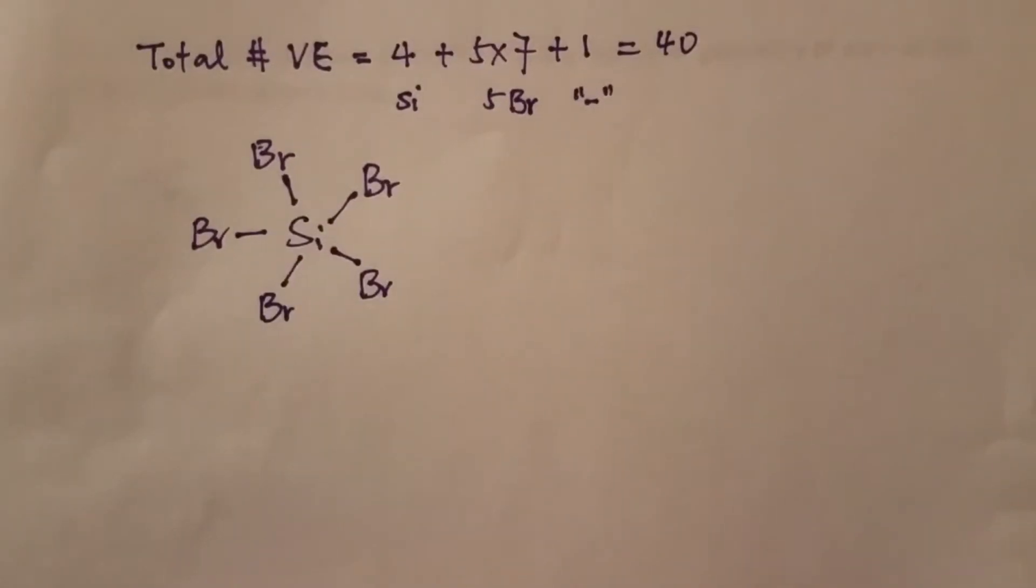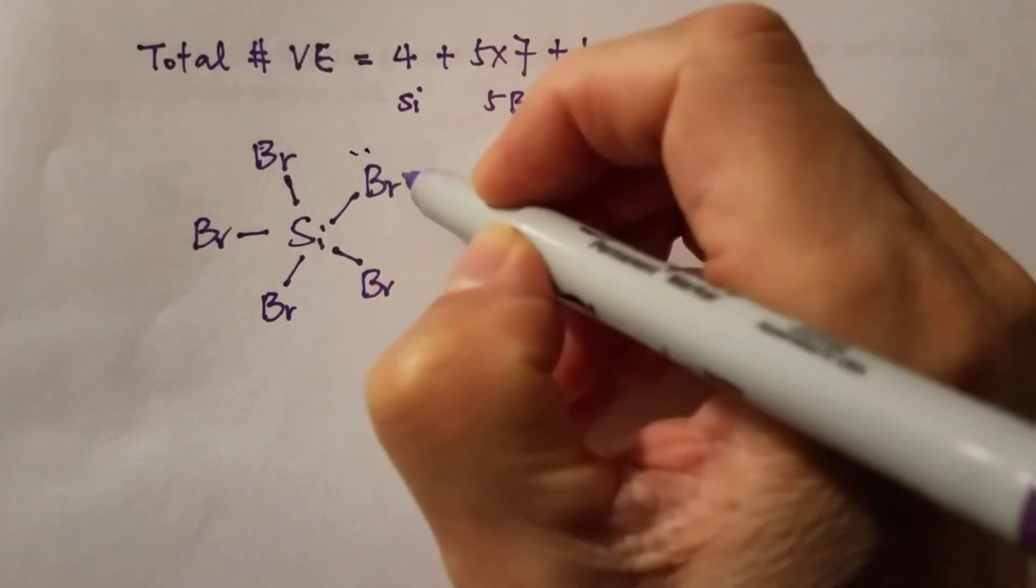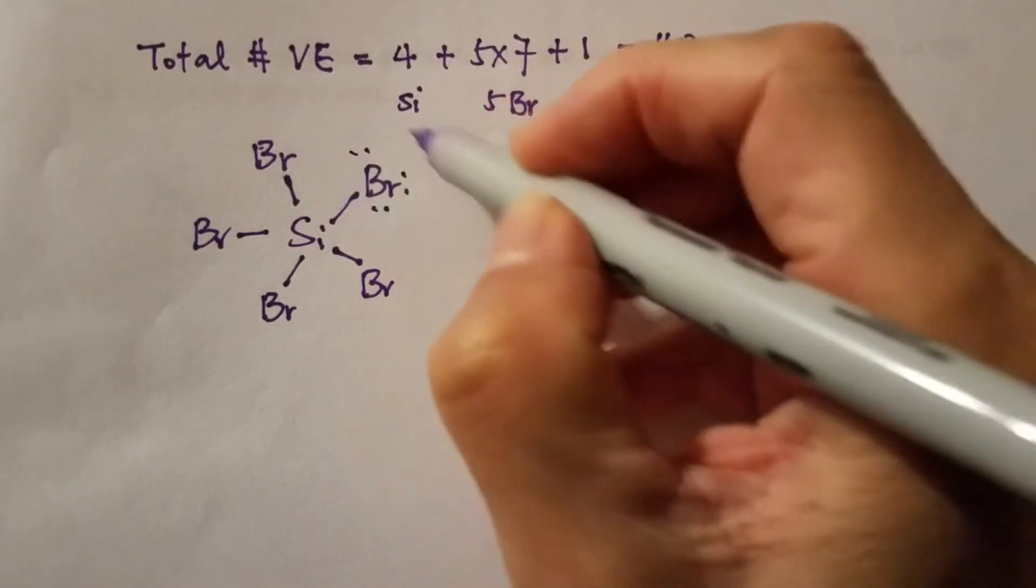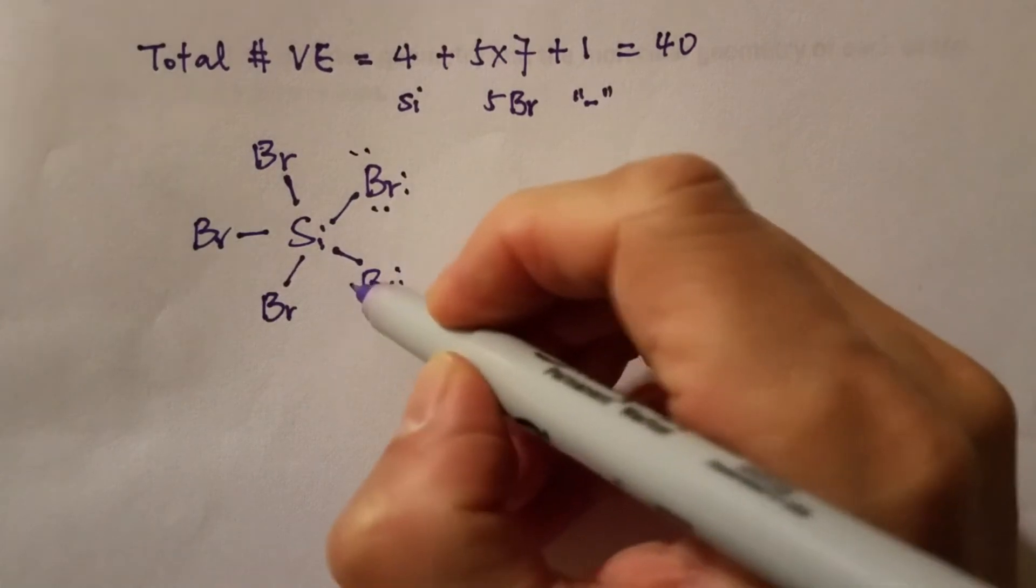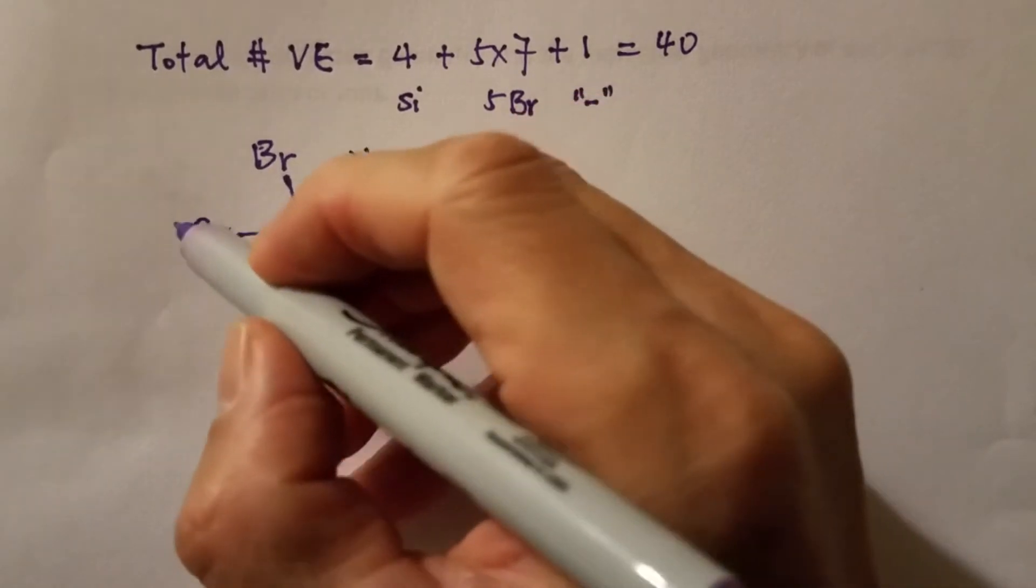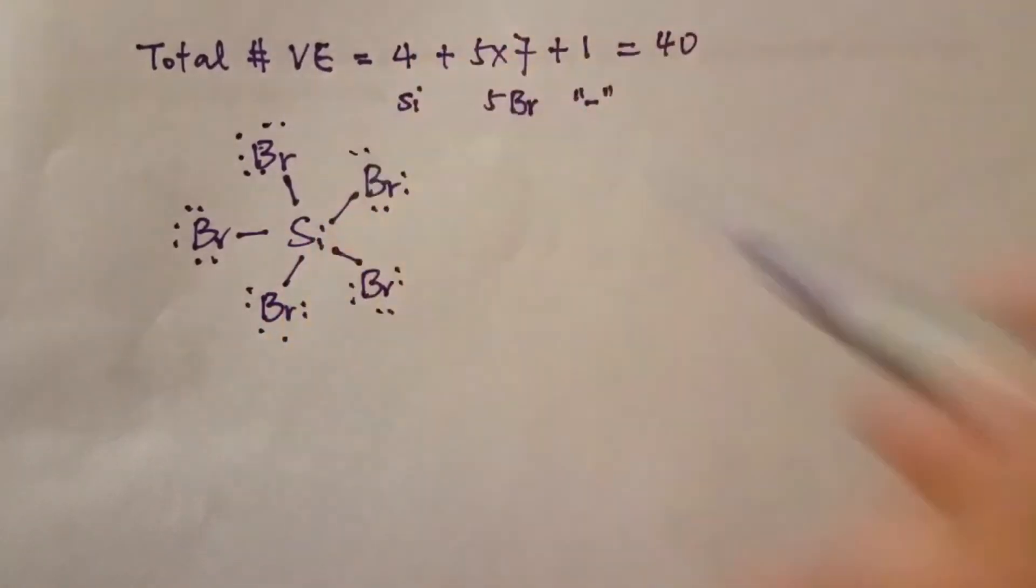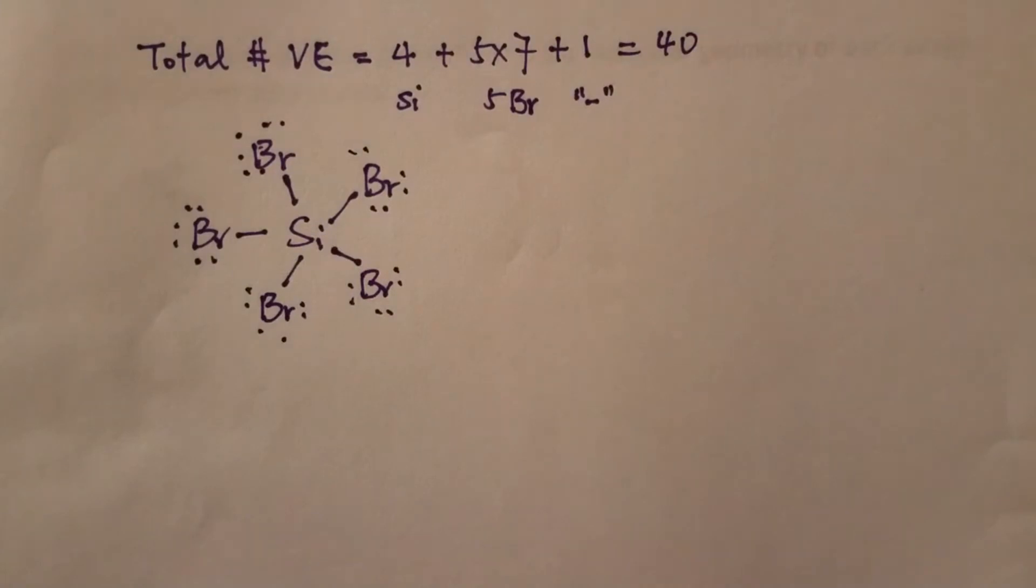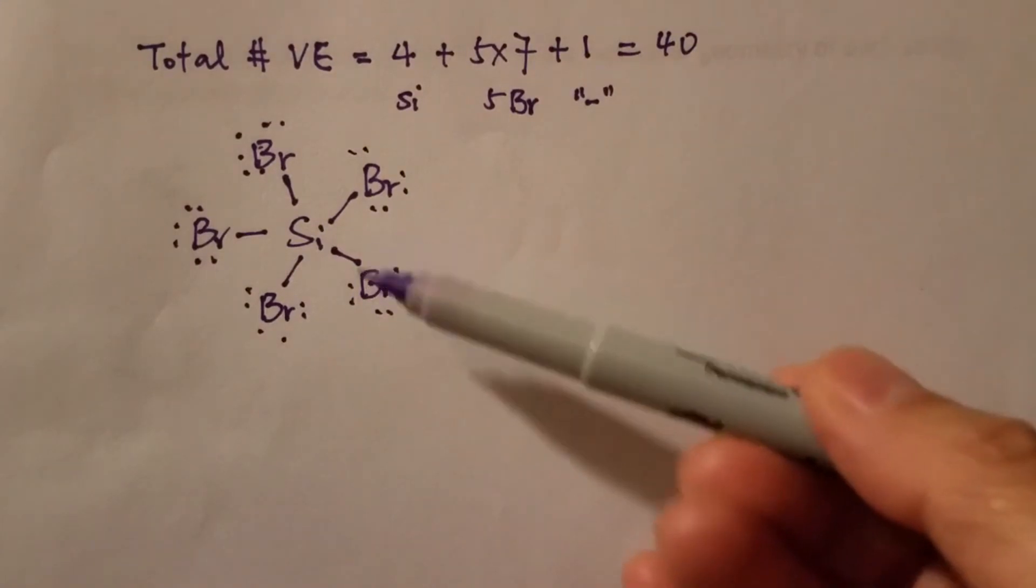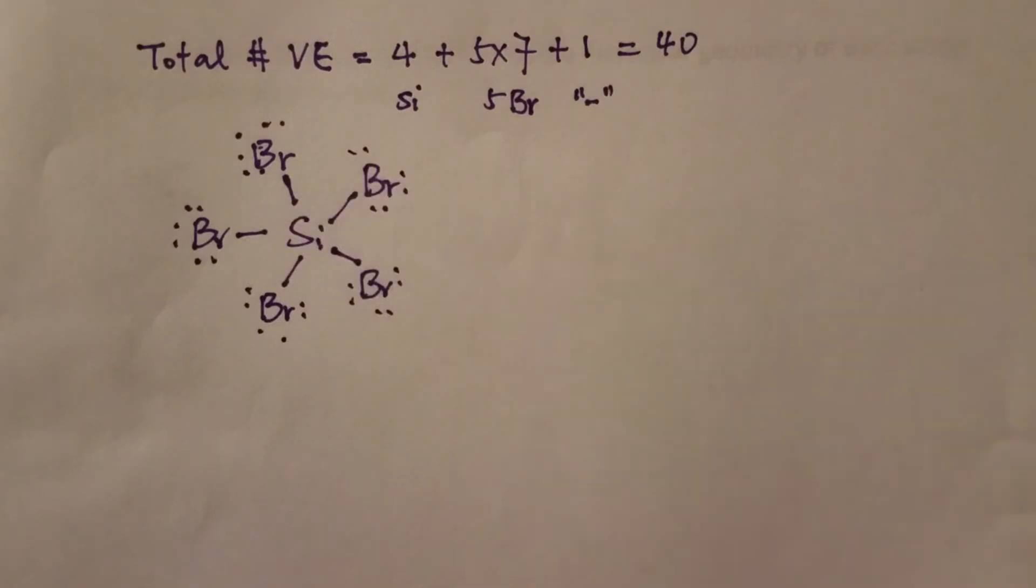Next we'll assign the remaining valence electrons to the surrounding atoms first to satisfy the octet rule. Now it's eight for this bromine. We'll do the same for all five bromines. Then how many electrons total have been assigned so far? Each unit here that's eight and we have five of such units. Then that's 40 electrons all assigned.